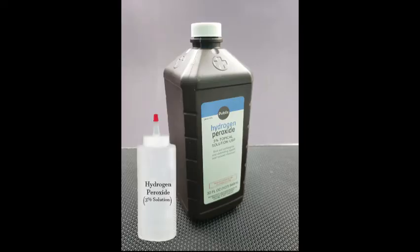Use a clean graduate cylinder to measure and pour 30 drops or 1.5 milliliters of hydrogen peroxide into each of the five test tubes.